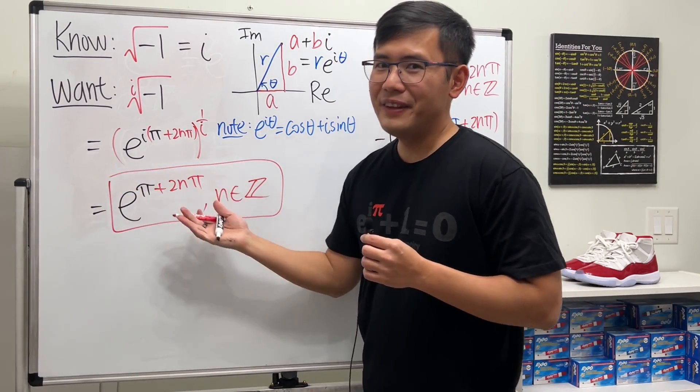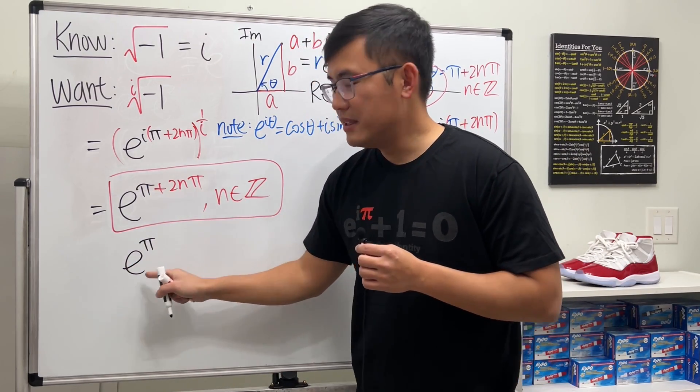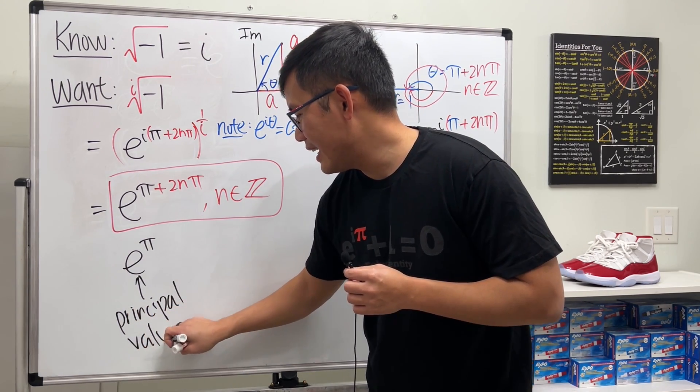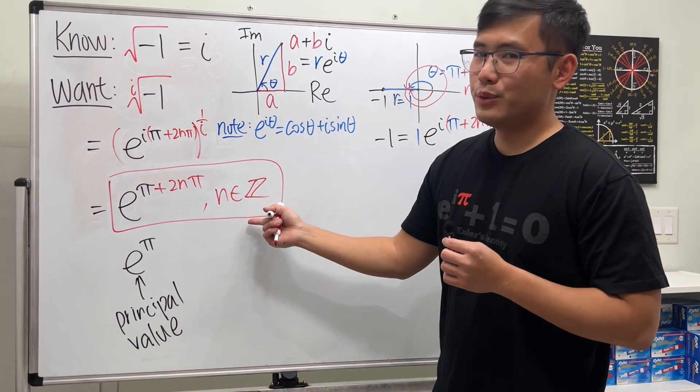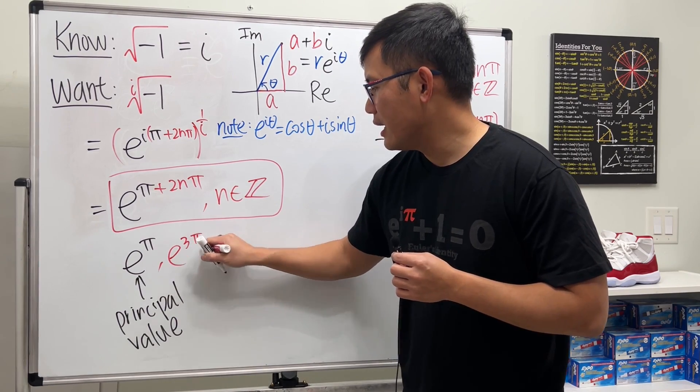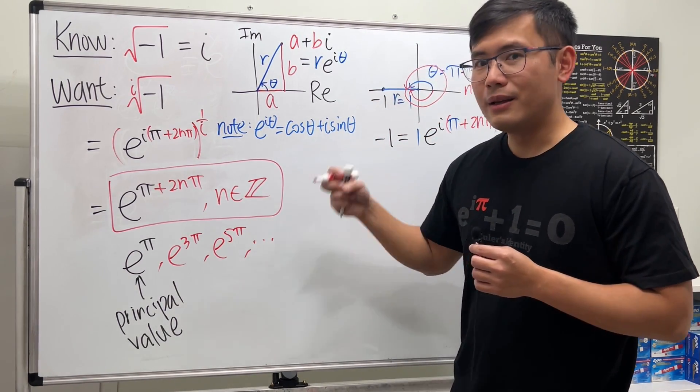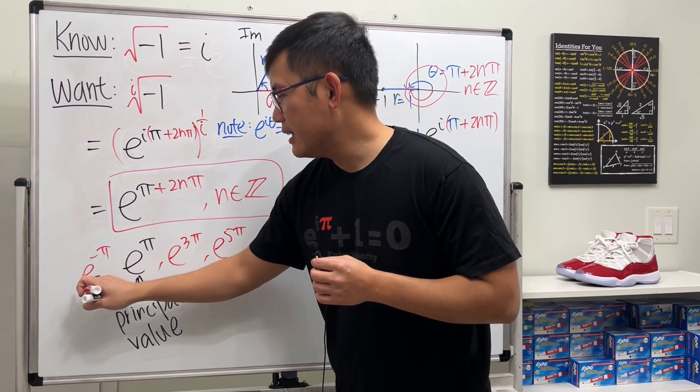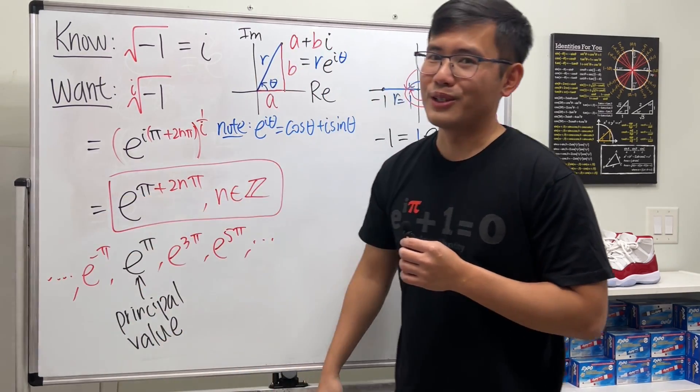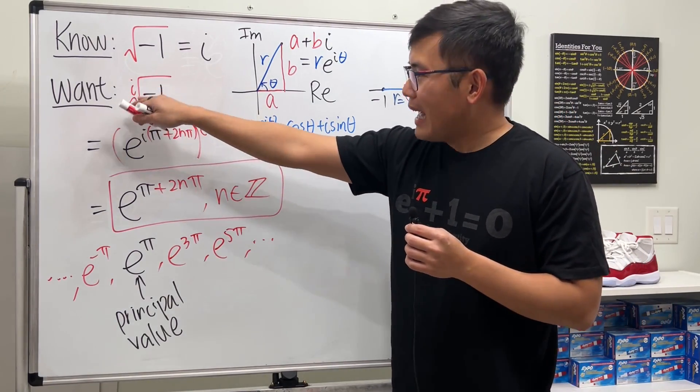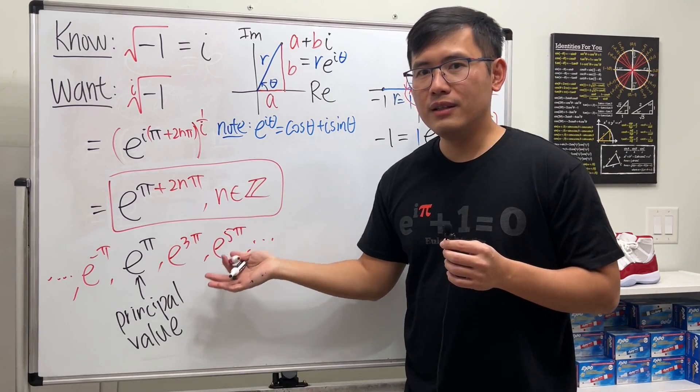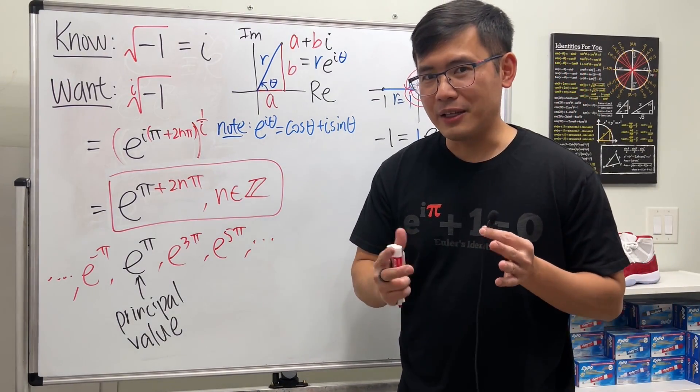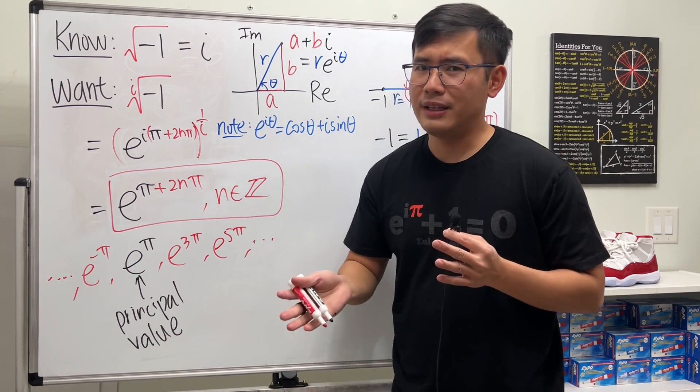In fact, we have infinitely many answers. When we have e to the pi, this is the so-called principal value. You can think about this as the first answer for all these answers. If you want more answers, you can plug in n equals 1 into here, then you get e to the three pi, then the next one will be e to the five pi, and so on. But don't forget, we can also plug in negative integers. So if you have negative one, we will get e to the negative pi, then e to the negative three pi, e to the negative five pi, and so on. As you can see, when we have a crazy i-th root of negative one, we actually end up with infinitely many real numbers. But earlier we just got a not-real number, i. How crazy is this?